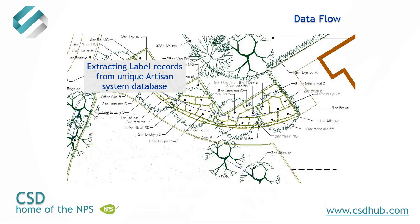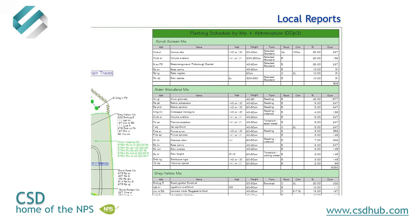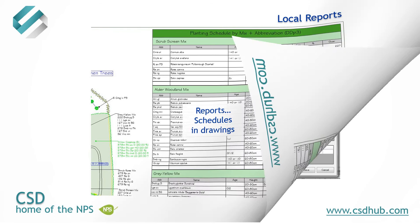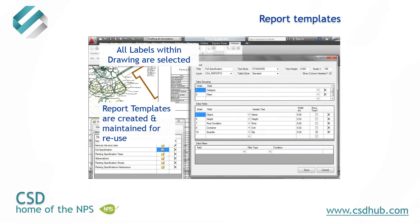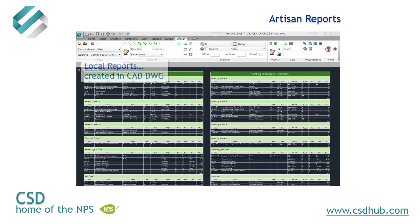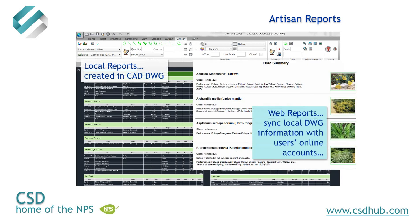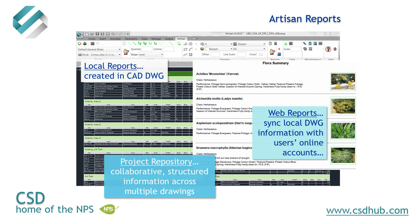Information is extracted from labels in drawings as reports. Estimates, schedules, registers, and lists are all types of reports depending on the fields selected. Schedules are placed in drawings and can be sorted by class or subclass, by location, or by user-defined criteria. Reports display label information and are updated dynamically when drawings are modified. Web reports offer extended functionality and are created via users' online accounts. Information in drawings is synced with web reports, providing a centralised up-to-date record of all drawing objects and options.